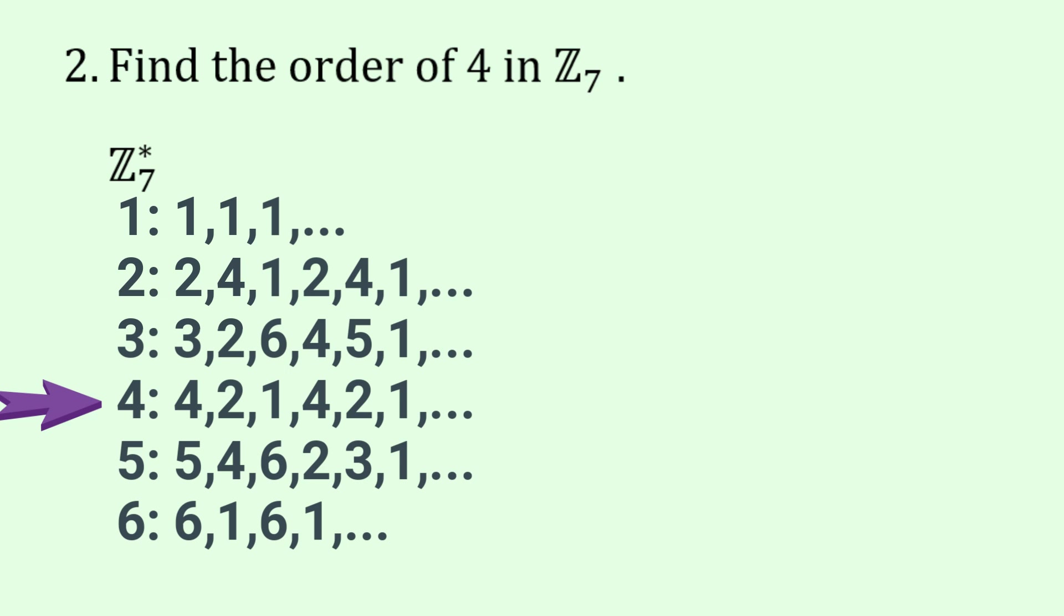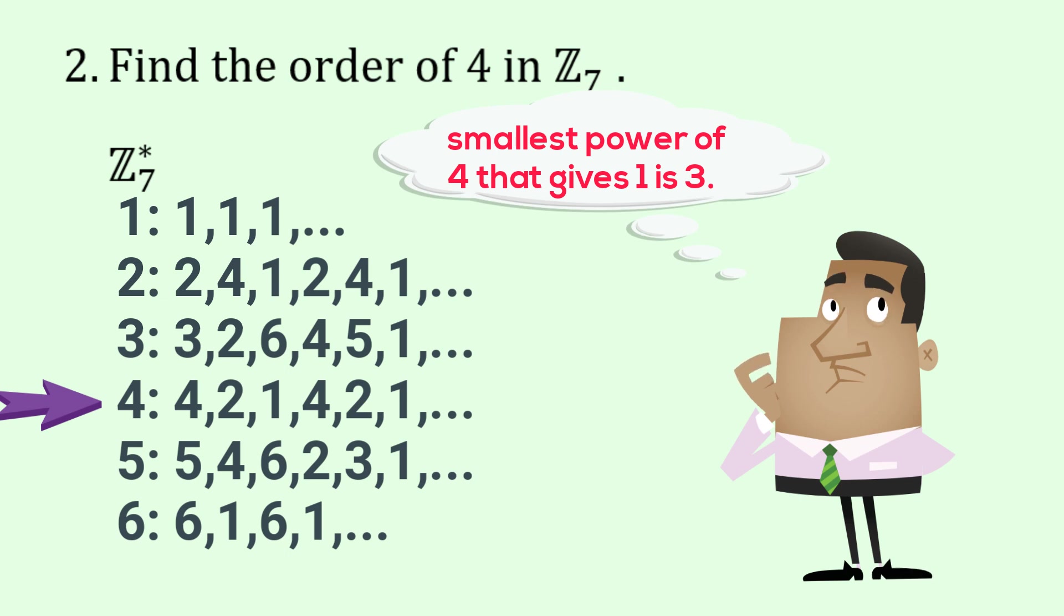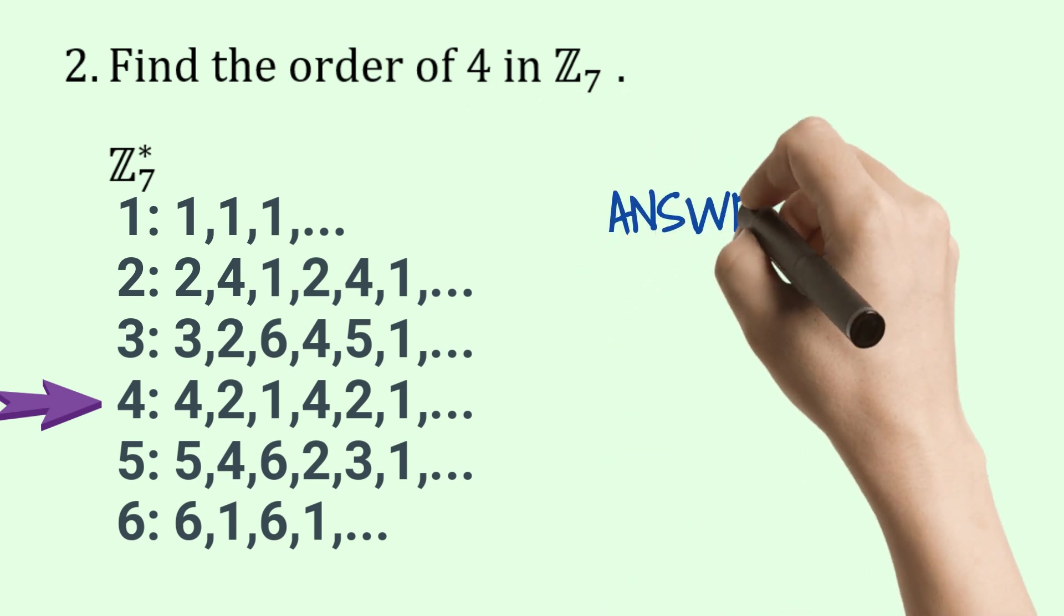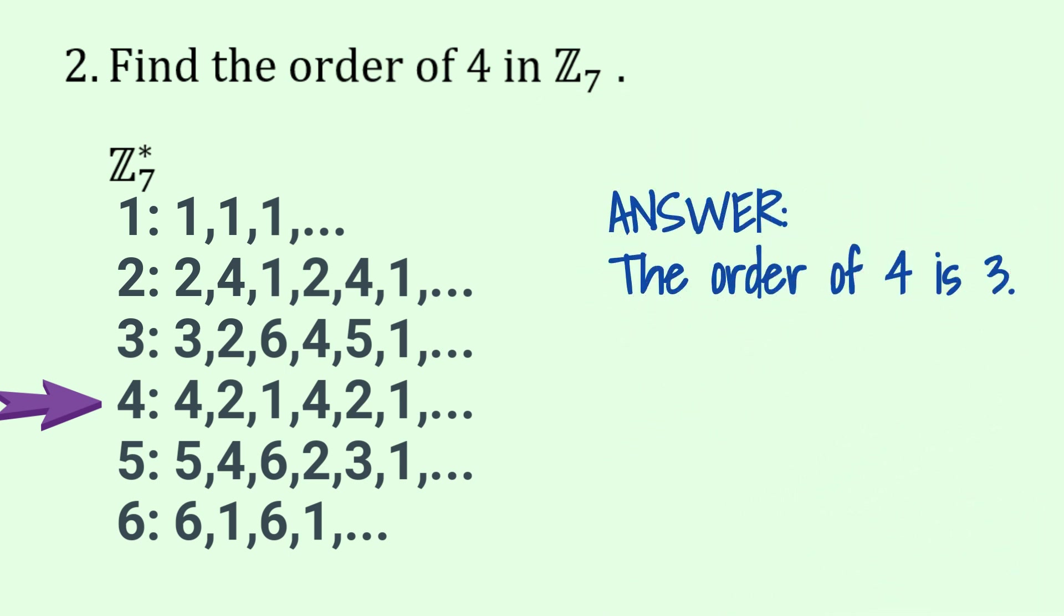And not the orders the powers go 4, 2, 1, 4, 2, 1. So the order of 4 is the smallest power that gives us a 1. So in this case you can see that the smallest power is 3. 4 cubed is equivalent to 1 modulo 7. So the answer is the order of 4 is 3.